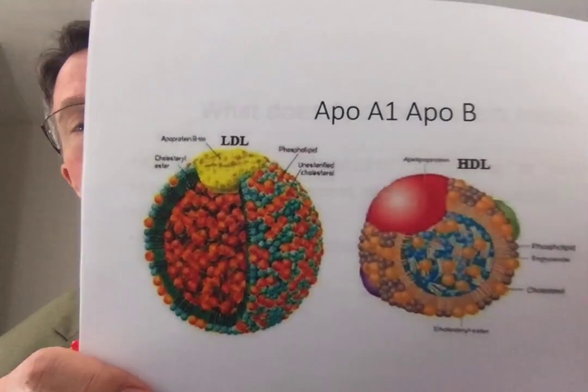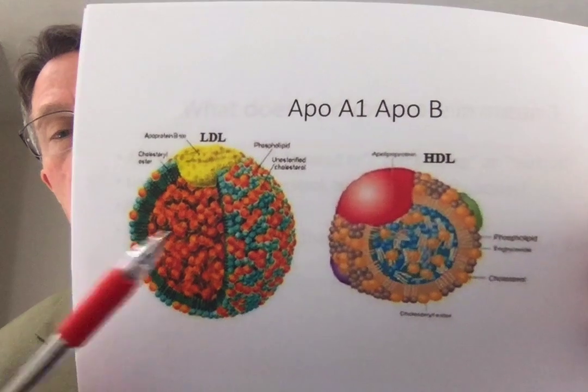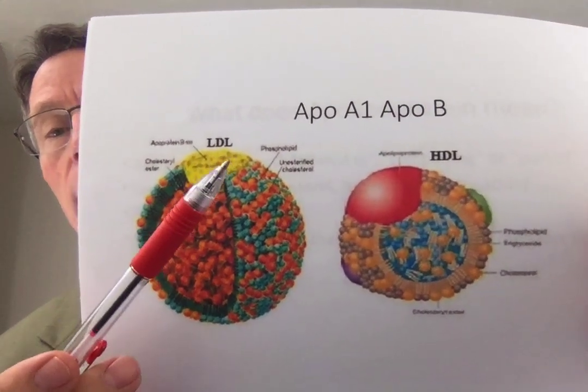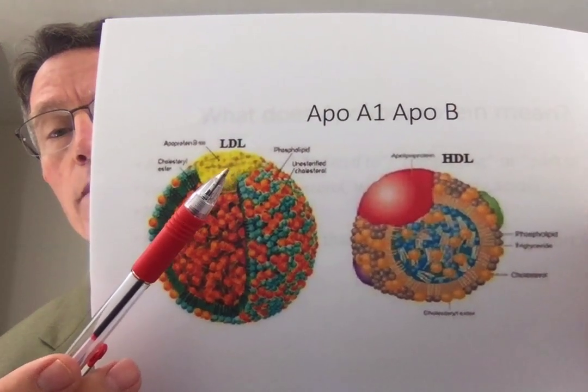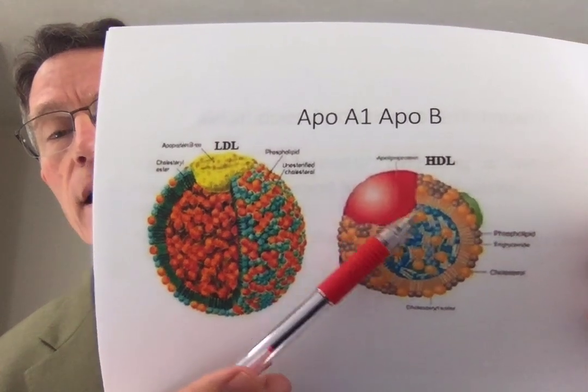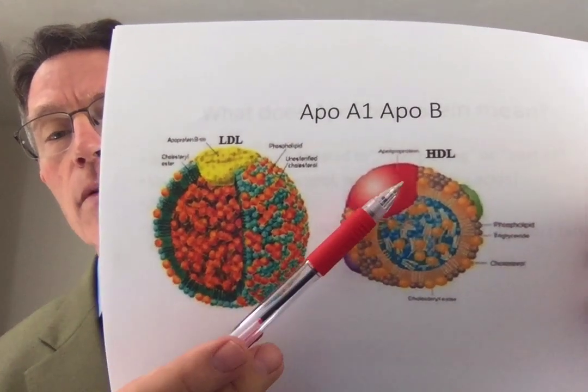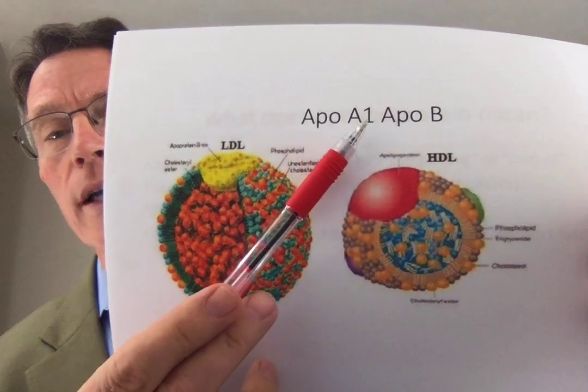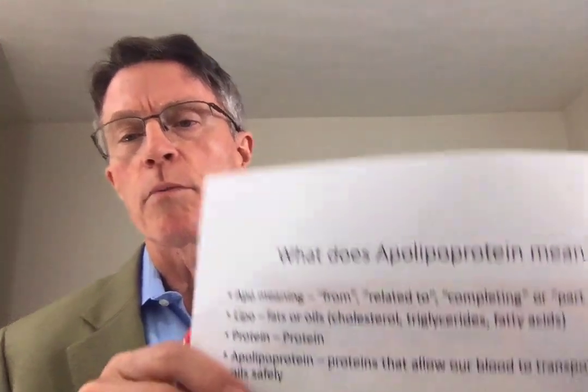It's a little bit more complicated than that. In fact, the proteins you see in these are slightly different. The proteins on LDL are called apolipoprotein B, and the ones in HDL are apolipoprotein A1. What does "Apo" mean? Apo is short for apolipoprotein.